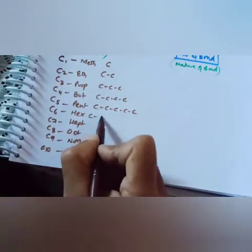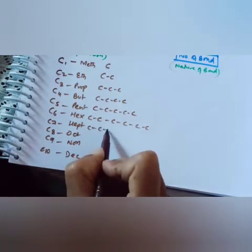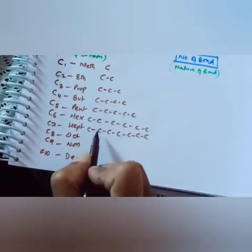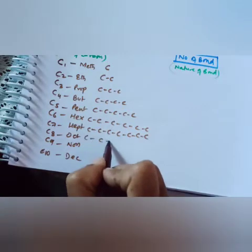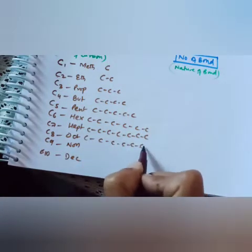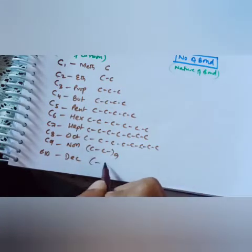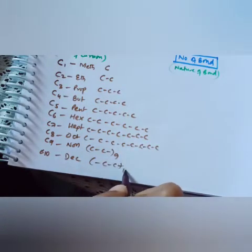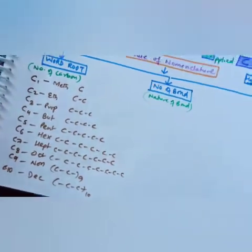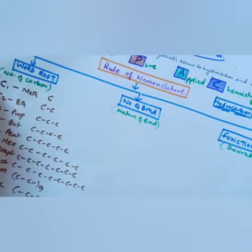I told you about catenation yesterday — the number of carbons will bond with each other and combine; that is called catenation. So one, two, three, four, five, six, seven, eight, nine, ten carbons can combine in this way. These are the word roots.